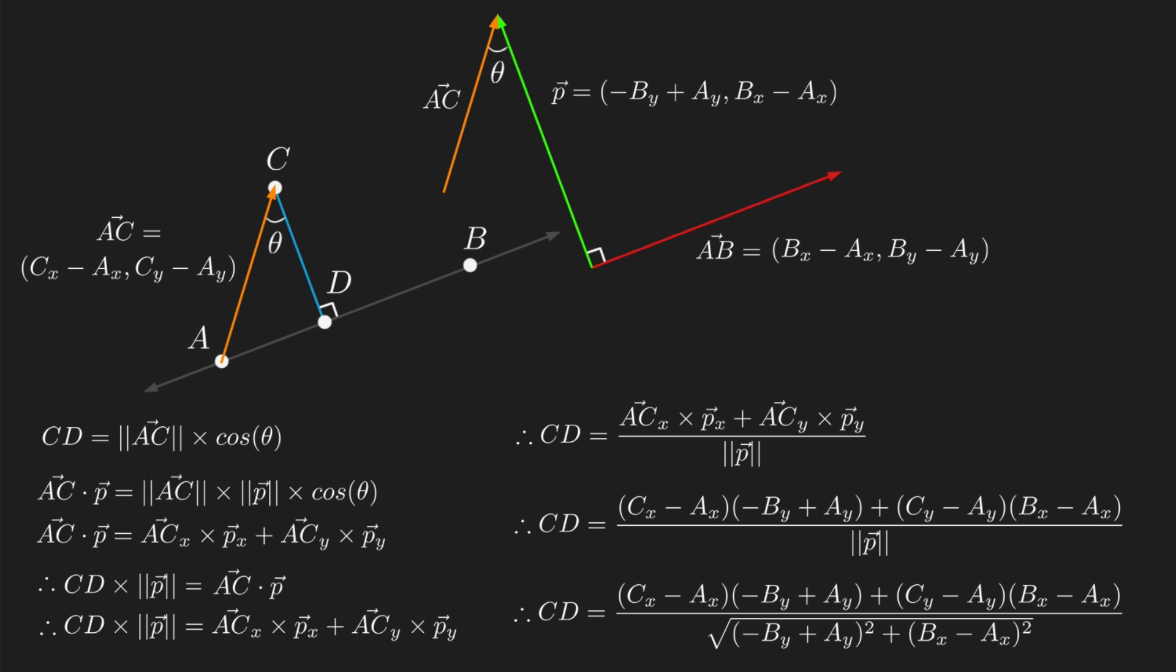Now remember how I said that CD could be negative, depending on the value for theta? Well if we want the actual positive length, we of course simply take the absolute value of the result.